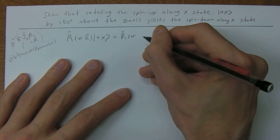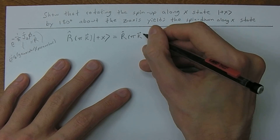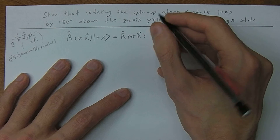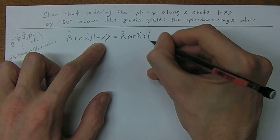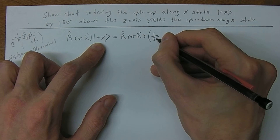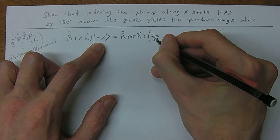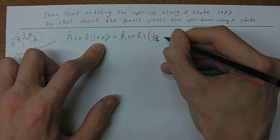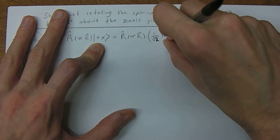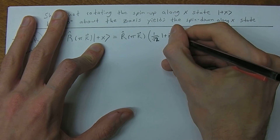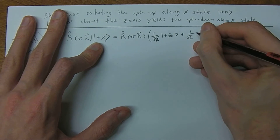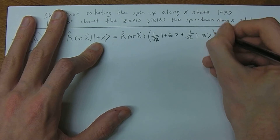We want to rotate by pi counterclockwise around the z-axis, and we're going to act this on the plus-x ket. Recall that plus-x represented in the z-basis is 1 over the square root of 2 times plus-z, plus 1 over the square root of 2 times minus-z.